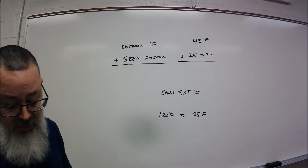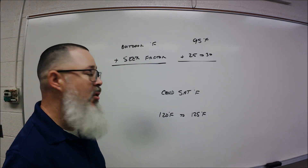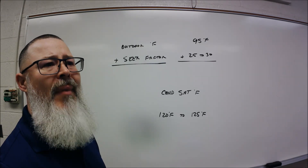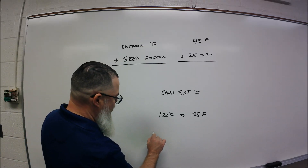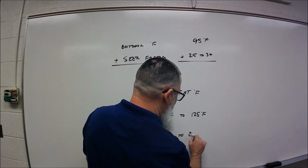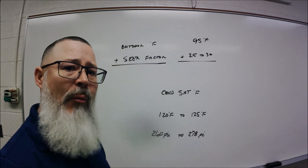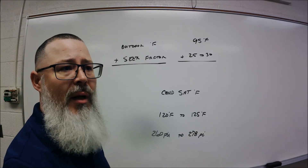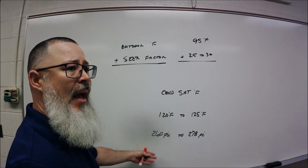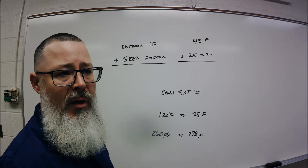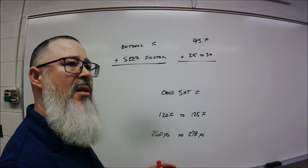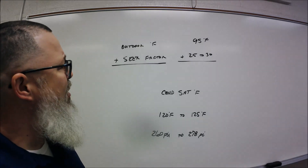Now if you have an R22 system, you can look up 120 degrees on your pressure-temperature chart — that's somewhere between 260 and 278 PSI, which would be the appropriate saturation point and pressure. I try to work mainly in temperatures first. If this was an R410A unit, you're not going to have 260 PSI at a 120-degree saturation point — you're going to have somewhere around 415 PSI. So you can adjust the pressures depending on your refrigerant.